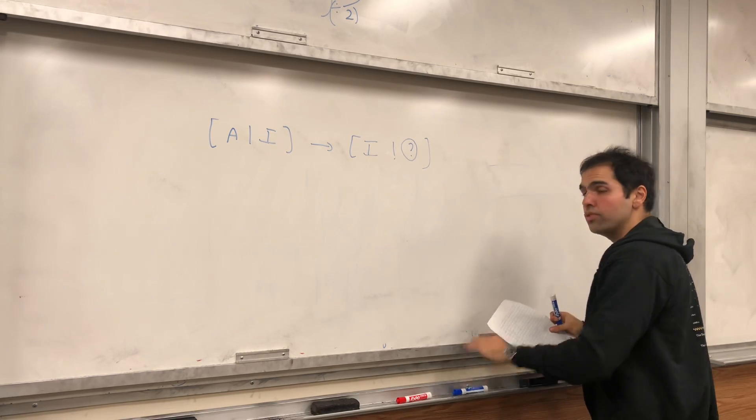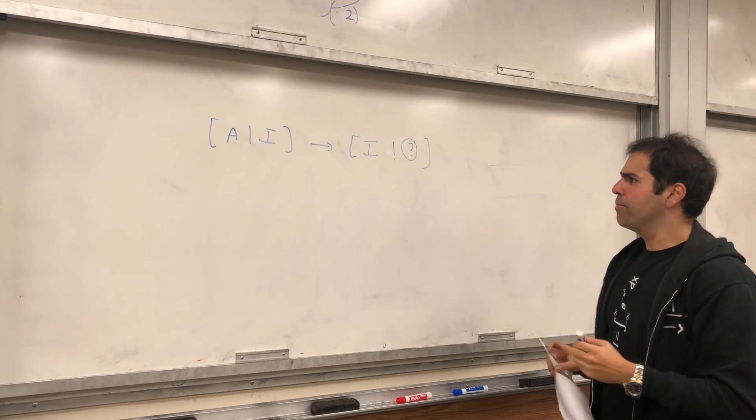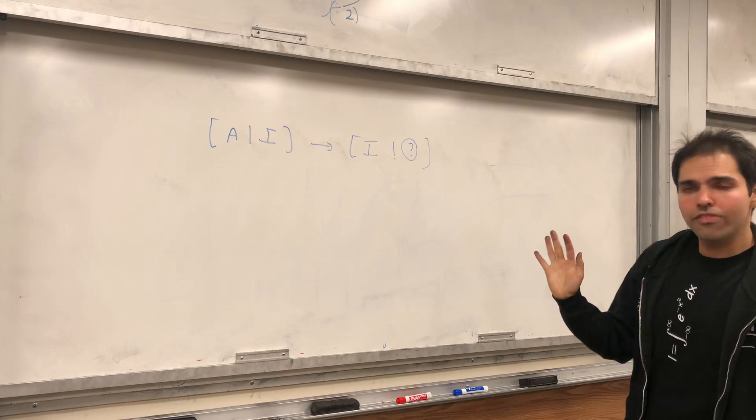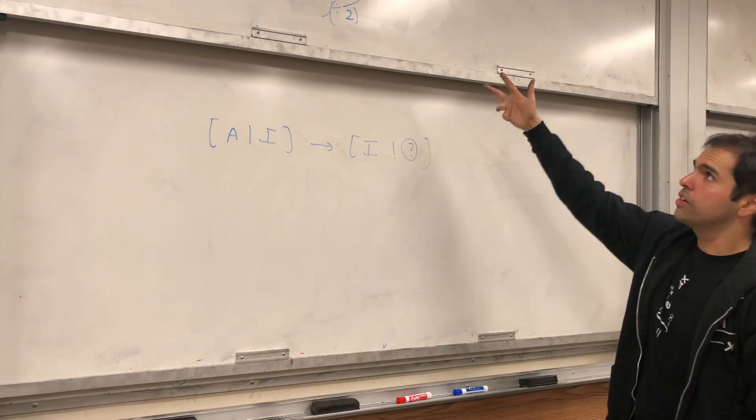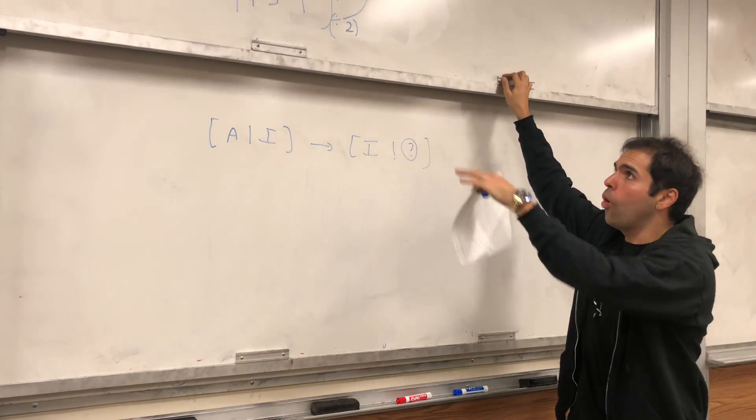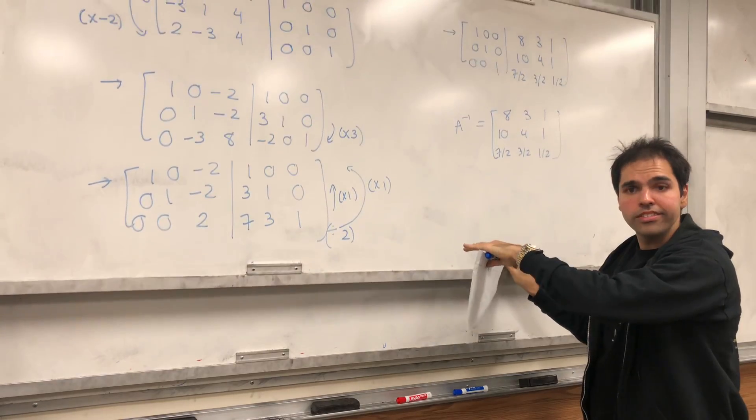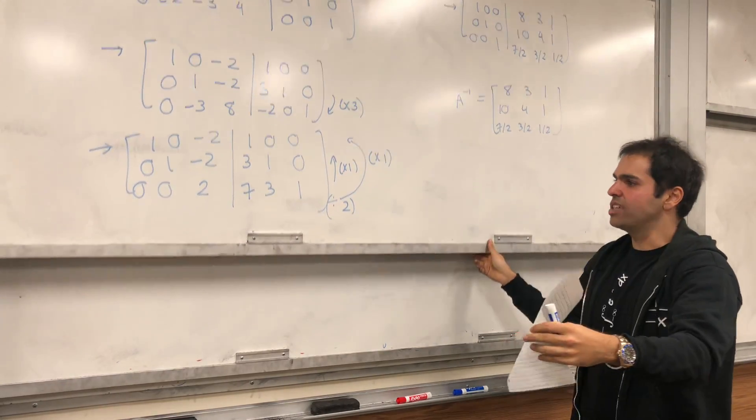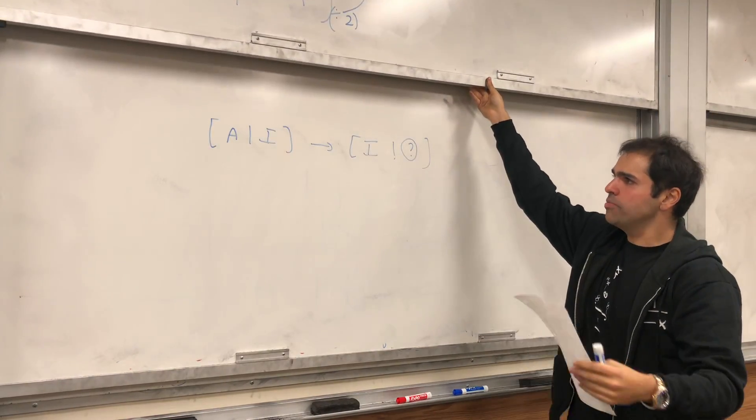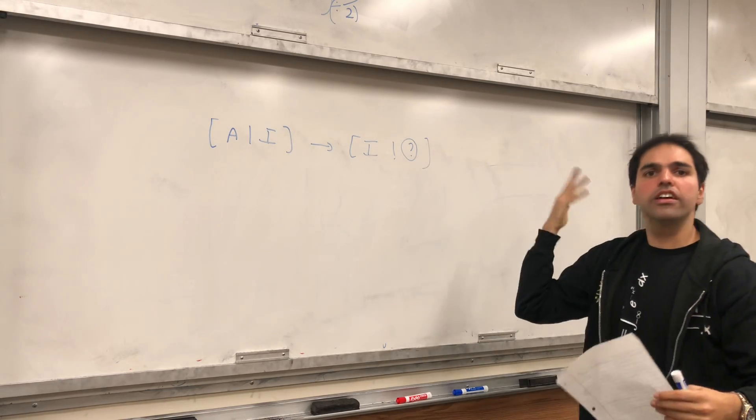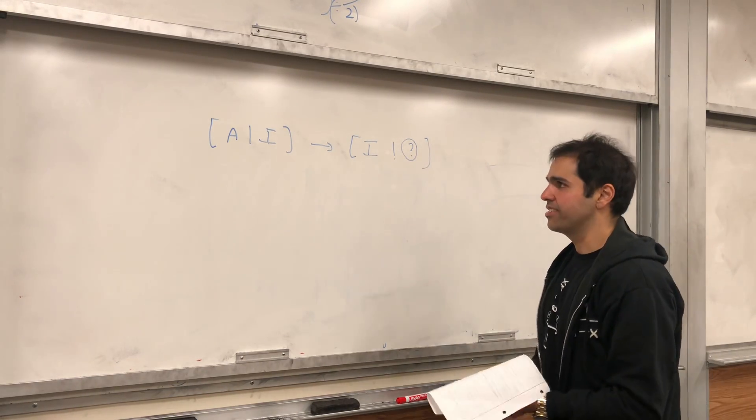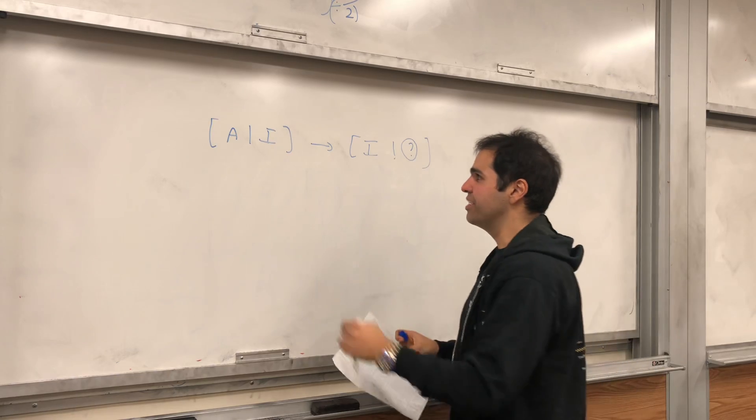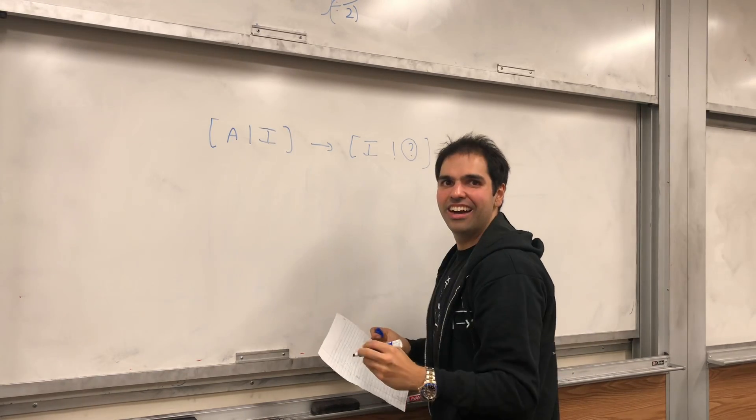I want to show you that this something else is precisely the inverse of A. So, here's one thing you need to know, and like I'm going to skip it maybe in another video. Turns out you can write the whole row reduction process in terms of a huge matrix. And this matrix is what's called the product of elementary matrices.